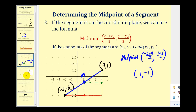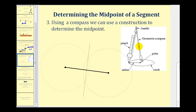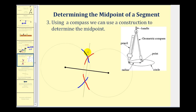The last way to determine the midpoint is through a construction using a compass. First, open the compass so it's more than half the length of the entire segment. Place the point of the compass on one endpoint and swing one arc above the segment and another arc below. Then place the point on the other endpoint and swing arcs above and below the segment again. Constructing a segment through the intersection of these arcs will pass through the midpoint of the segment — as shown by this vertical dashed line passing through the intersection of the two arcs.